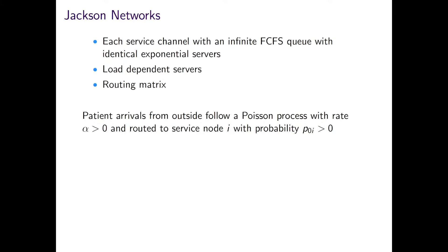This requires a routing matrix to describe the probabilities of movement between the queues in the overall system. So, for example, if patients arrive following a Poisson process with rate alpha and are routed to service node i with probability P0i. Then, upon completion of service, they can move to node j with probability Pij or leave the system with probability P0i.